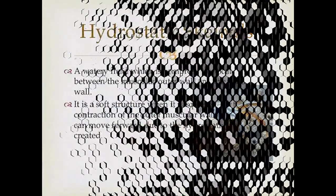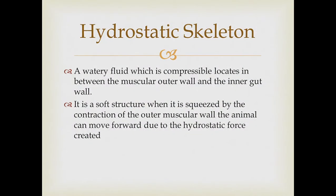The hydrostatic skeleton is the second type. A water fluid, which is incompressible, is located between the muscular outer wall and the inner gut wall. It is a soft structure. When squeezed by the contraction of the outer muscular wall, the animal can move forward due to the hydrostatic force created by the outer muscular wall on the liquid between these two walls.